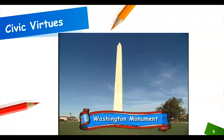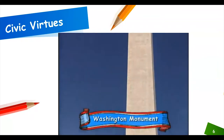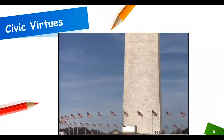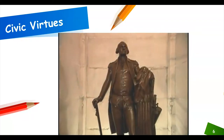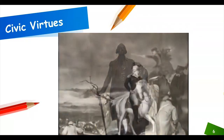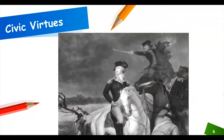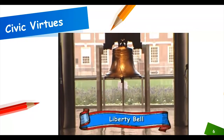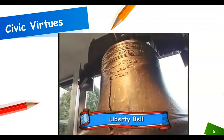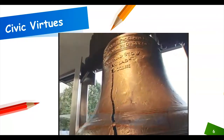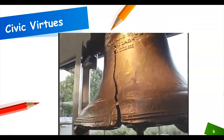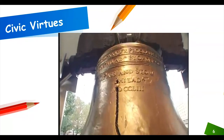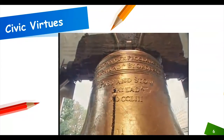This is the Washington Monument in Washington, D.C., our nation's capital. The Washington Monument was built in honor of our first president, George Washington. It is a symbol of democracy. This is the Liberty Bell in Philadelphia, Pennsylvania. The Liberty Bell was rung when the founders of our nation signed the Declaration of Independence, and it is a symbol of independence.